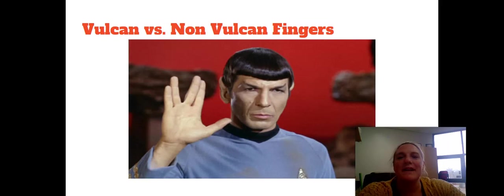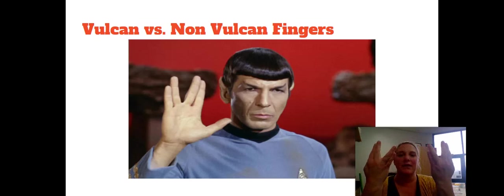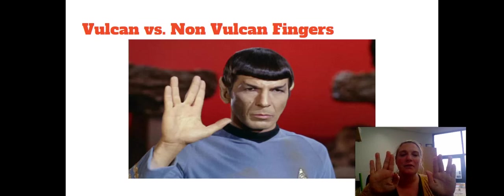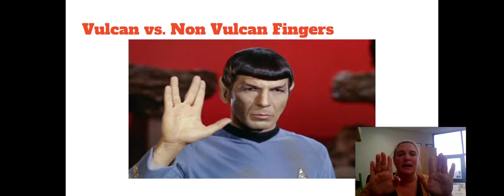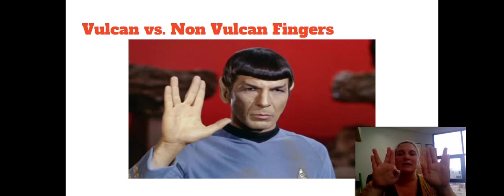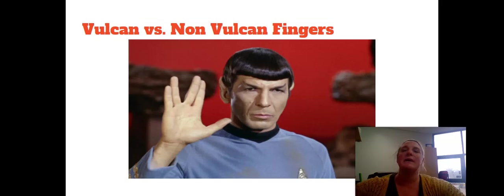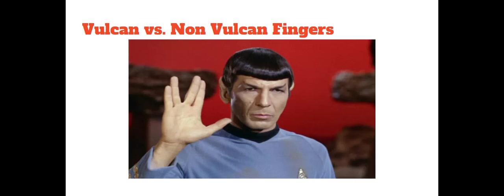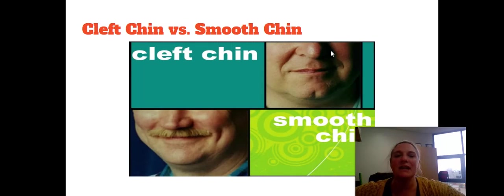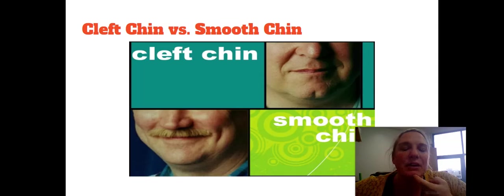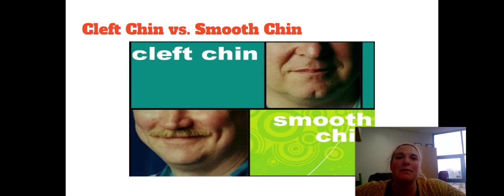Vulcan fingers — next one's fun. Just take your hands and make the Vulcan sign. If it's difficult for you and you're having to manipulate your fingers to spread them apart, you're non-Vulcan. You have to be able to do it with both hands very easily. So it's either Vulcan or non-Vulcan fingers. Then, cleft versus smooth chin. Look at your chin — you might have a little dimple called a cleft, or it's smooth. You might have to manipulate it to see if that dimple shows up when you smile.